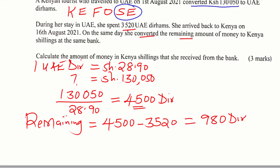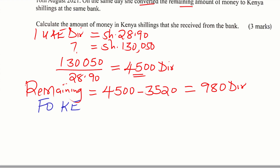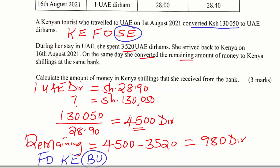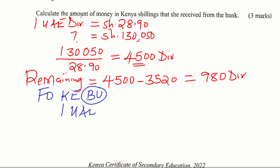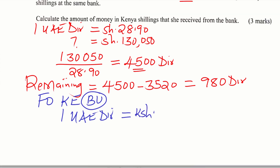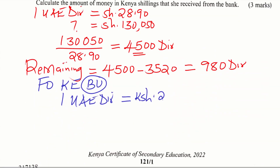She converted these 980 dirhams when she arrived back in Kenya on 16th of August to Kenyan shillings. Now this conversion is from foreign money to Kenyan shillings. In this situation we buy — so we use the buy column for 16th of August.